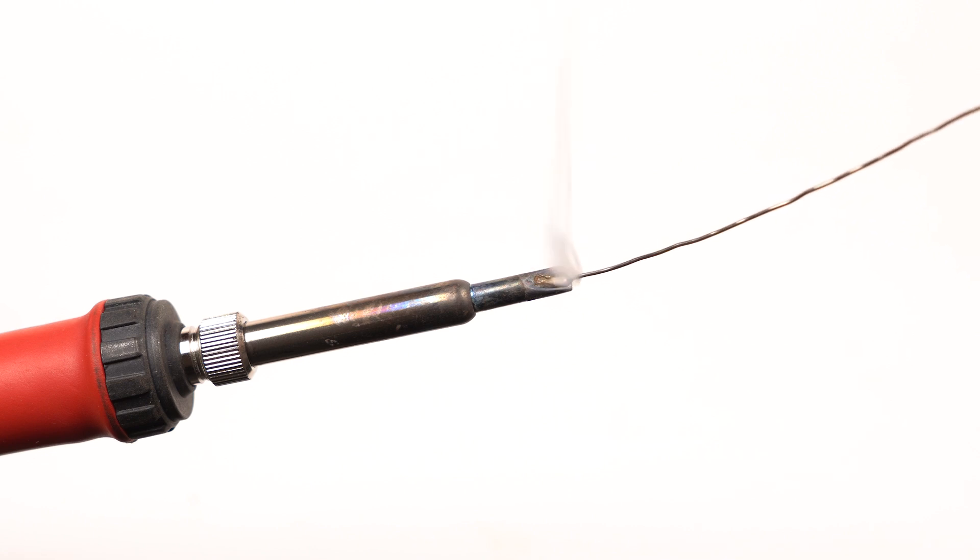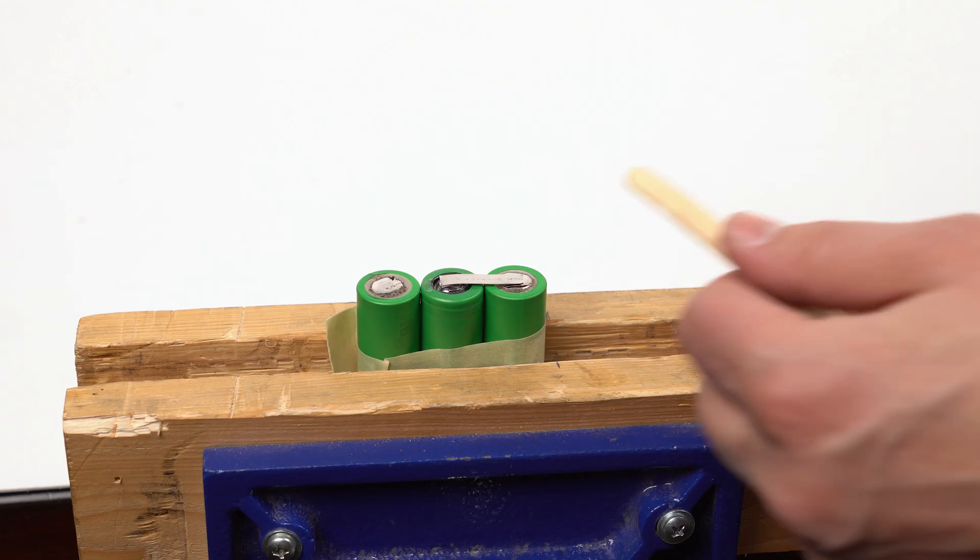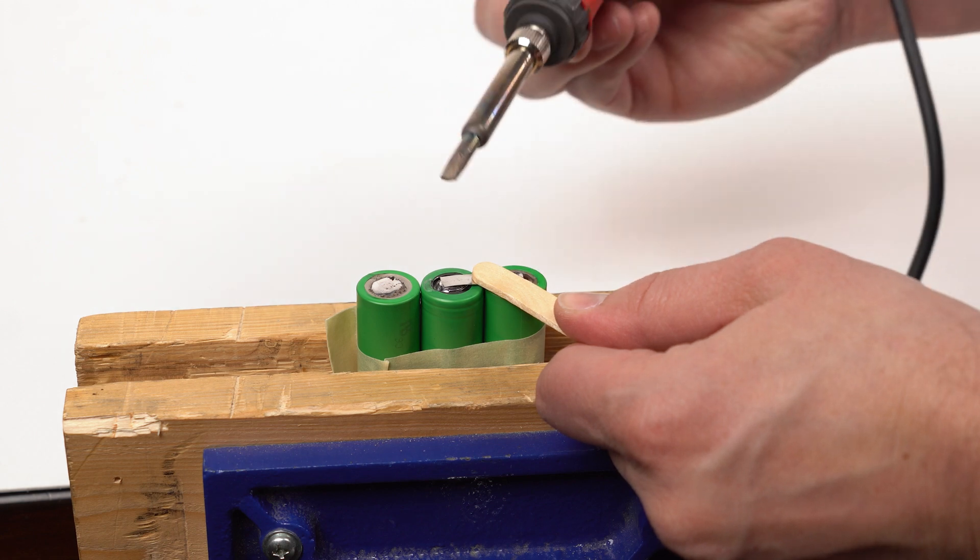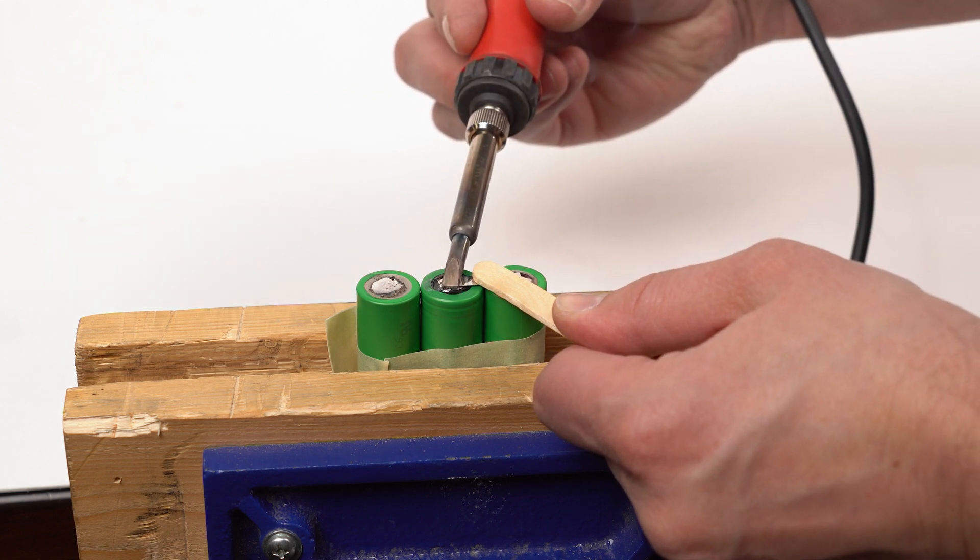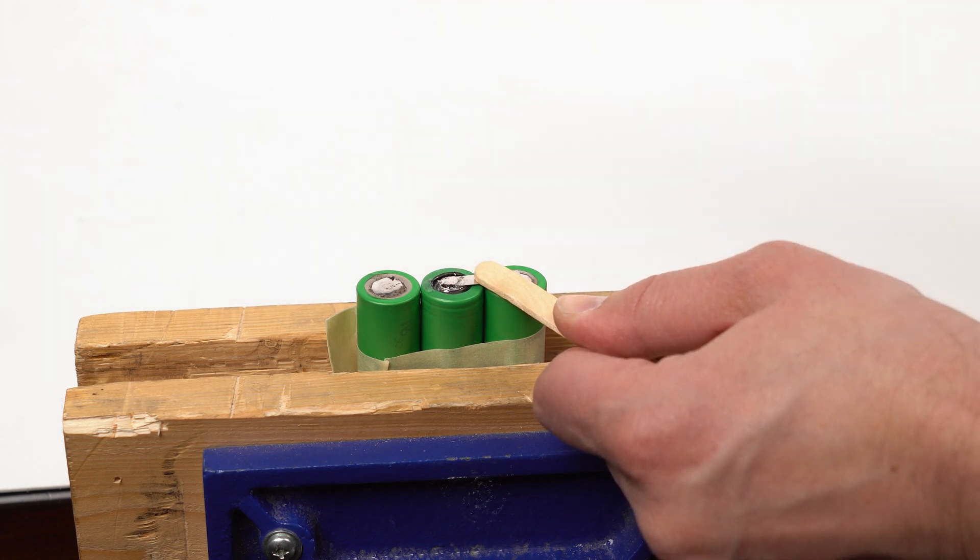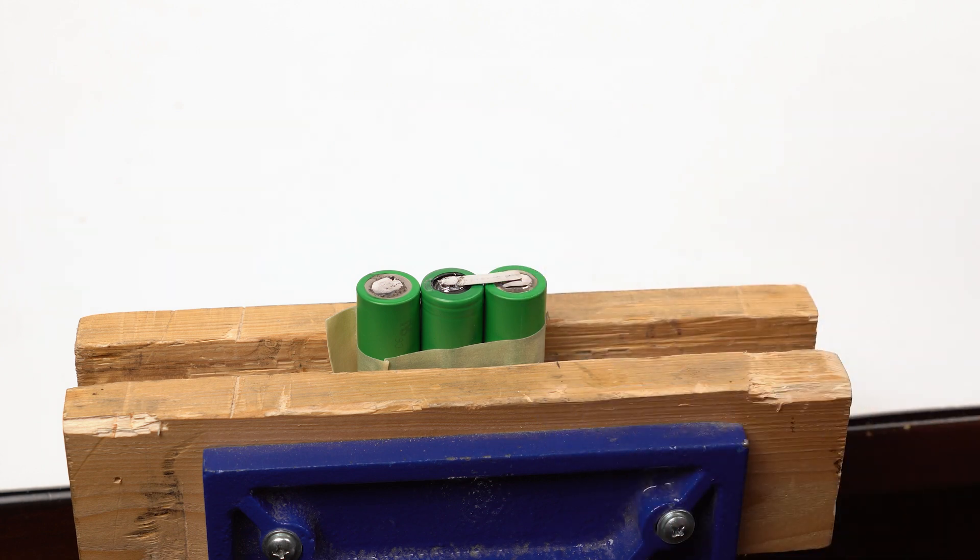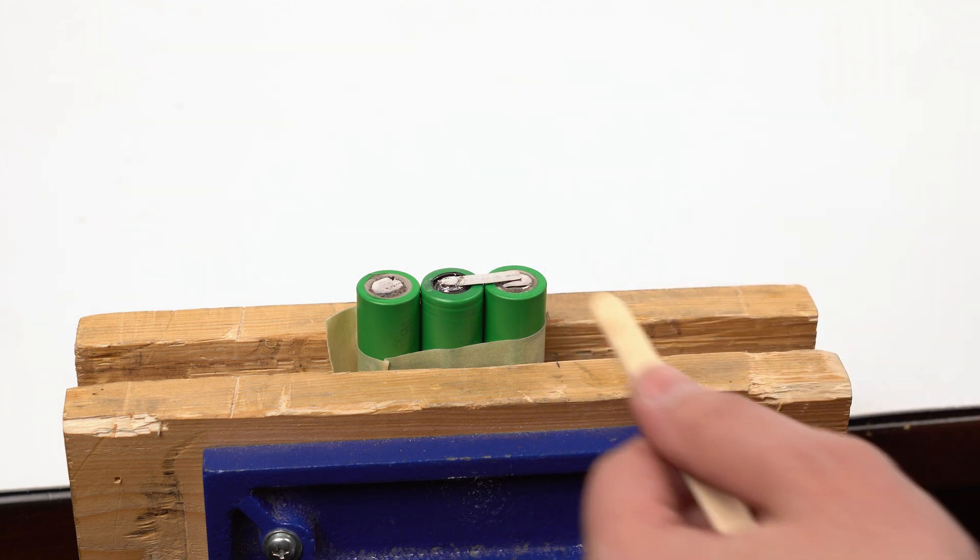Thoroughly tin your soldering iron tip. Use a popsicle stick or something similar to hold the tab in place while you solder. Ensure the solder flows, creating great contact between the tab and the cell. Again, don't linger too long or you may damage the cell.